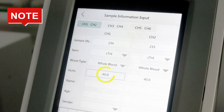Note, the instrument automatically checks the sample type, whole blood or other. For whole blood samples, the HCT percentage can be manually added and the default value is 40.